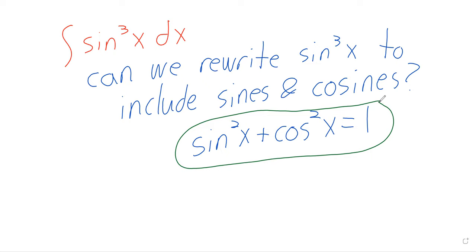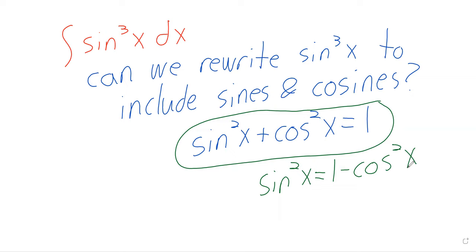The Pythagorean identity relates sine squared and cosine squared, so we could write sine squared of x equals one minus cosine squared of x. But we don't have a sine squared of x — we have a sine cubed of x. I'm going to show you the trick here.